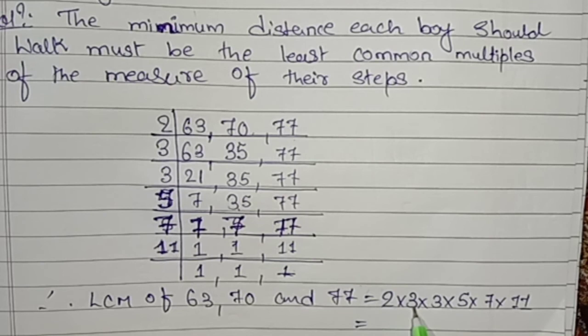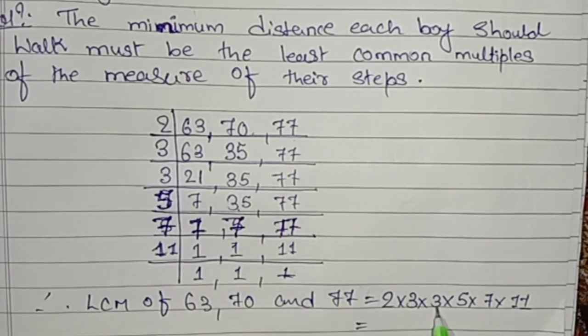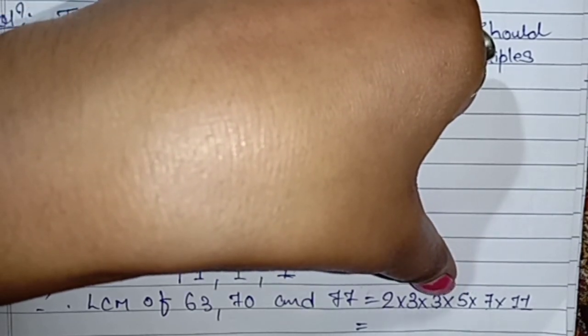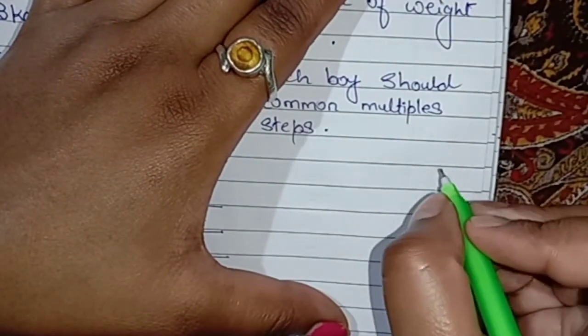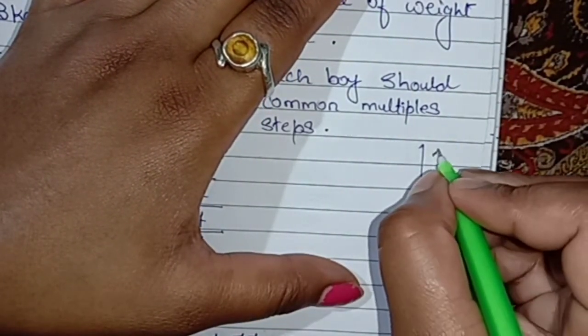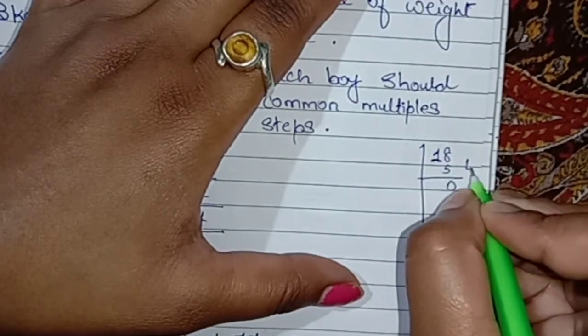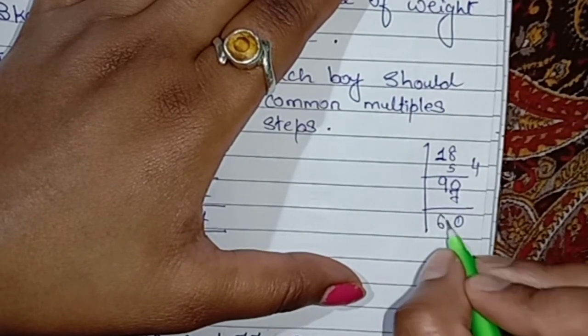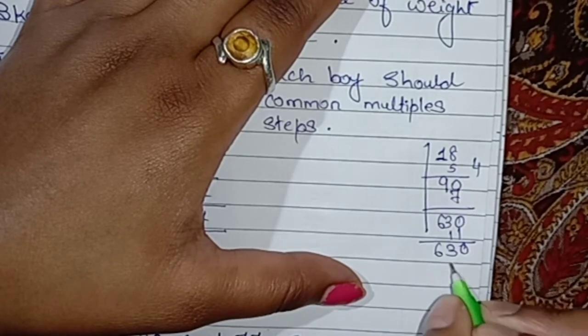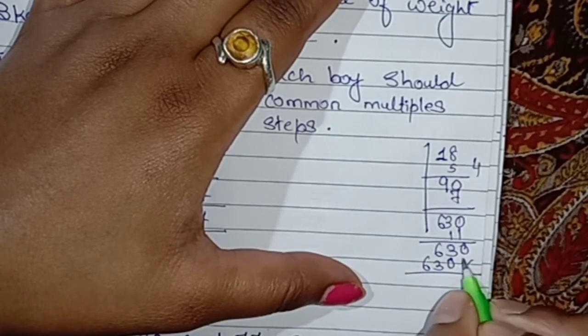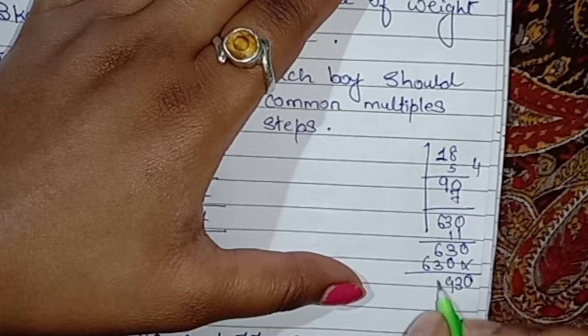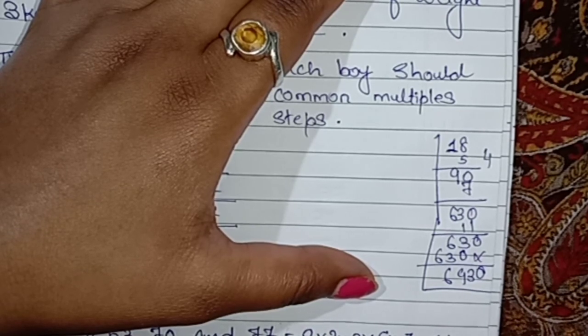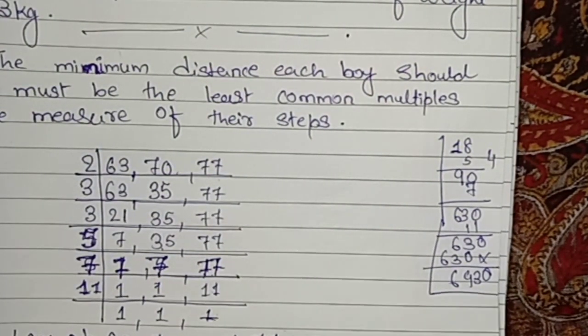If we multiply: 2 threes are 6, 6 threes are 18. First we will find 6 threes are 18, 18 into 5. 5 eights are 40, 5 nines are 45 plus 4 is 90. 7 times 0, 7 nines are 63. 11 times 0, 3 times 6, 0, 36. So answer is 6,930.